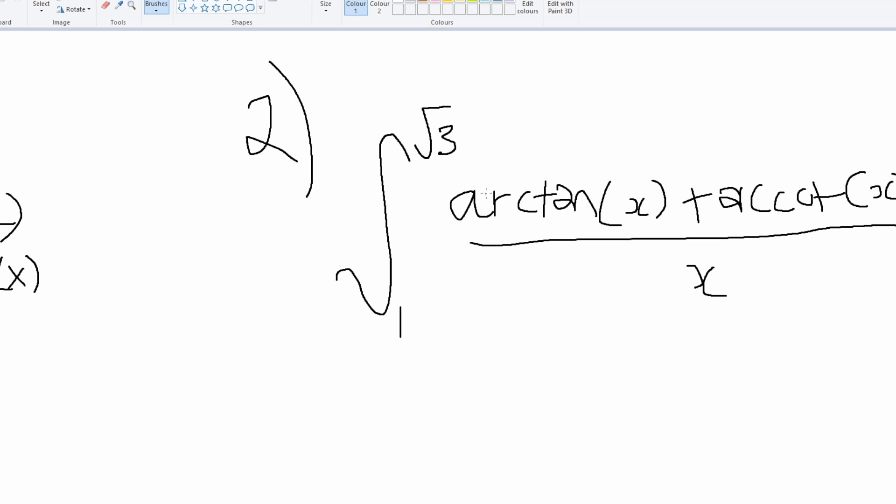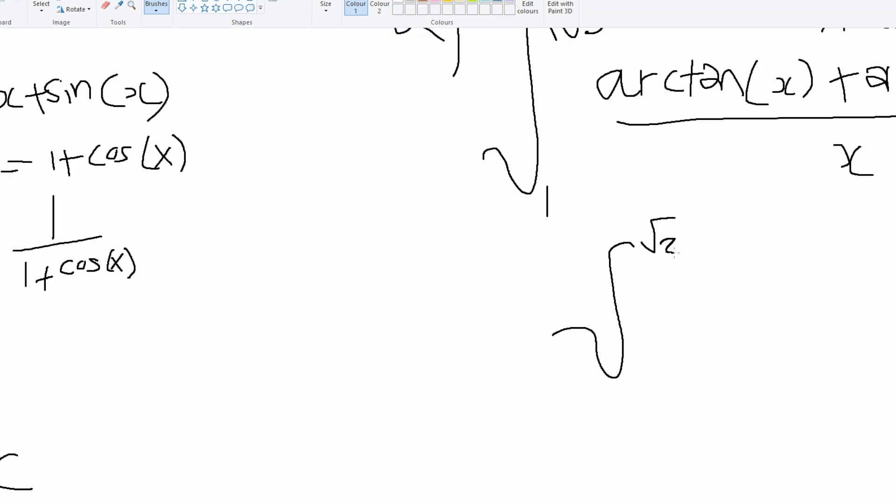Now many will get confused and they'll say, well, how is that possible? If they plug in the inverse tan of 2 plus the inverse cot of 2, you will not get π/2, and that's because many put them in degrees instead of radians. So remember to keep the values in radians. This is just equal to π/2, so then the integral actually becomes really simple.